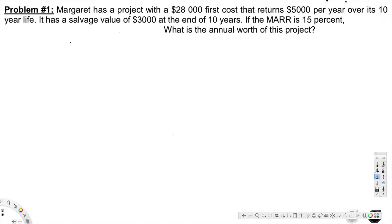What's going on guys, let's look at this problem right here. This question is asking: Margaret has a project with a $28,000 first cost that returns $5,000 per year over its 10-year life. It has a salvage value of $3,000 at the end of 10 years.